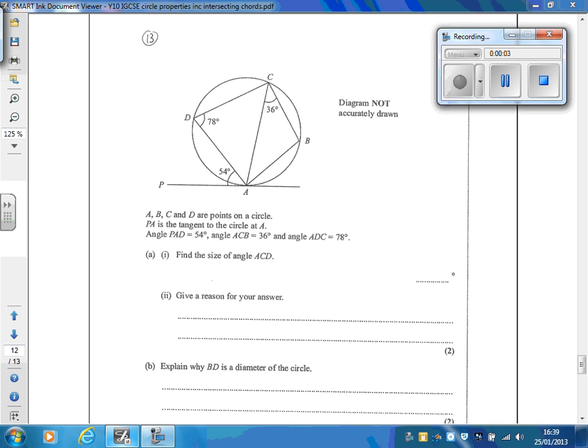Okay, the first angle we're asked to find is angle ACD. This one here. I'm going to use the alternate segment property. We have our tangent here, we have a triangle, which means this angle here, the 54 degrees, is going to be the same as this one up here. So angle ACD is actually 54 degrees, and the reason is that it's the angle in the alternate segment.